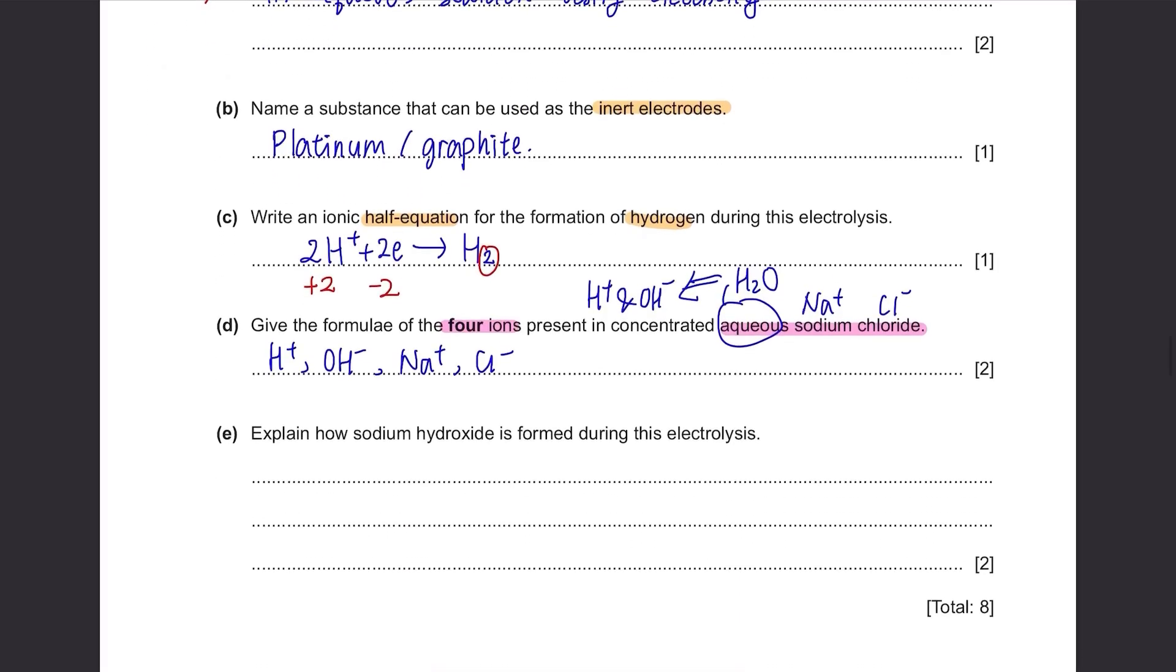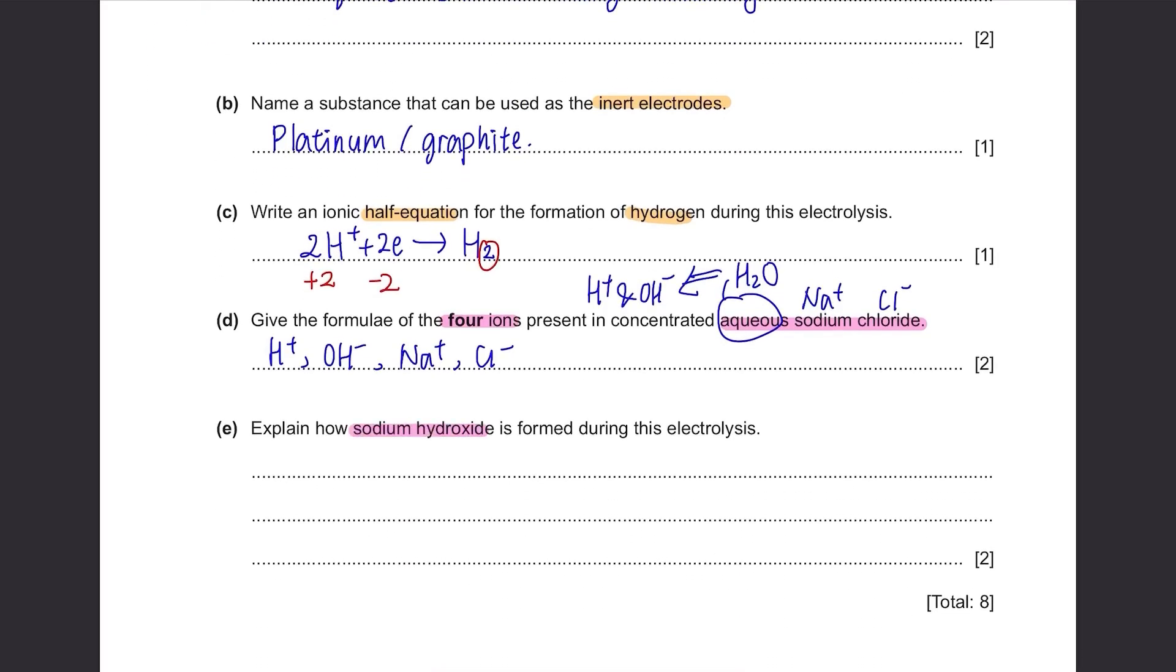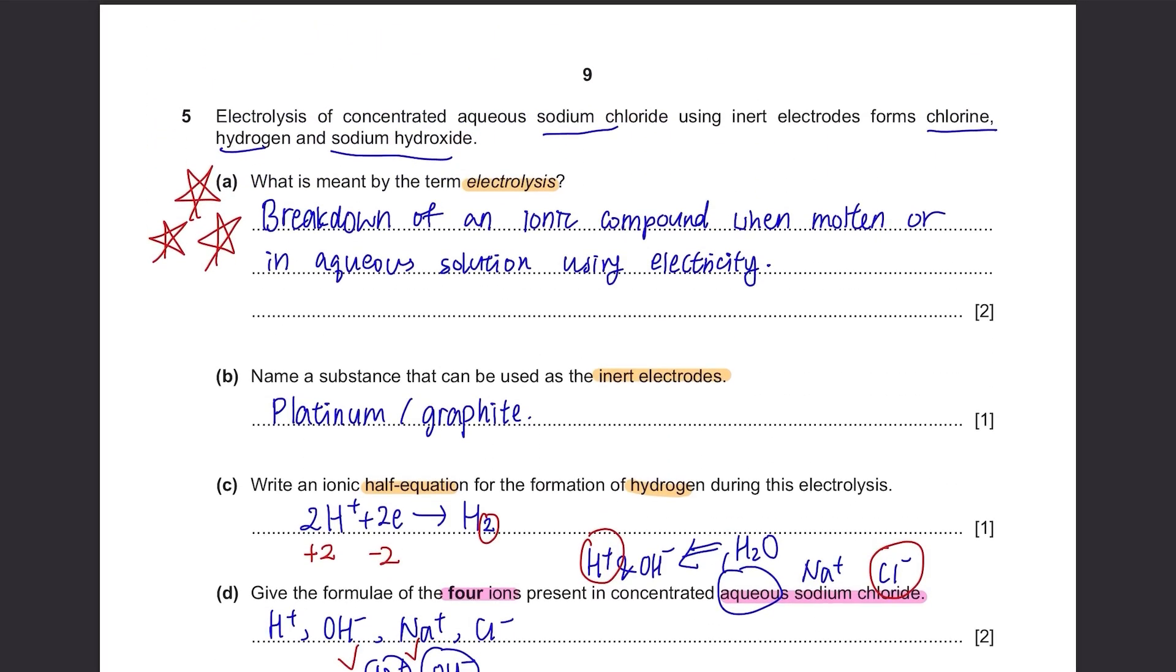Part E: Explain how sodium hydroxide is formed during this electrolysis. To form sodium hydroxide, you will need Na⁺ and OH⁻. And how did you get these two? It's because the other two ions, which are H⁺ ions and Cl⁻ ions, have been discharged, and the only remaining ions are Na⁺ and OH⁻. You can know this because in the beginning of the question, they said that it forms chlorine, hydrogen, and sodium hydroxide. These gases mean they have been discharged.